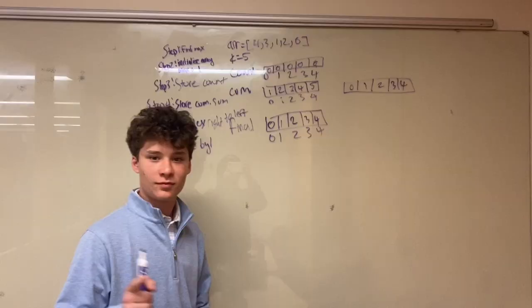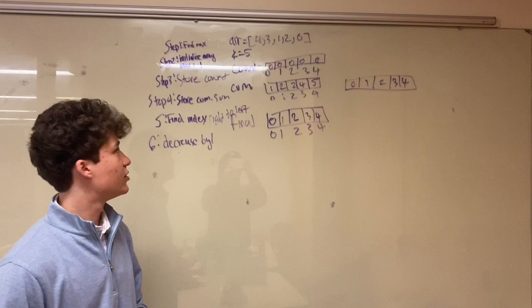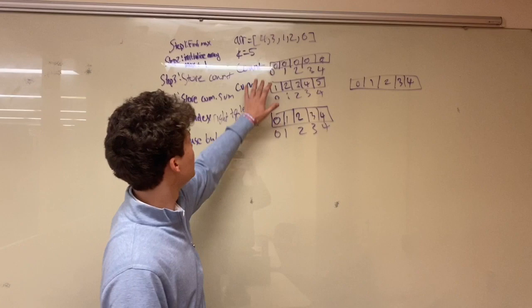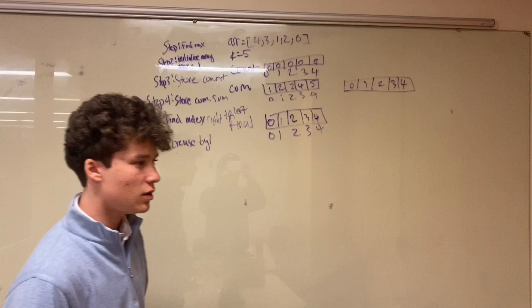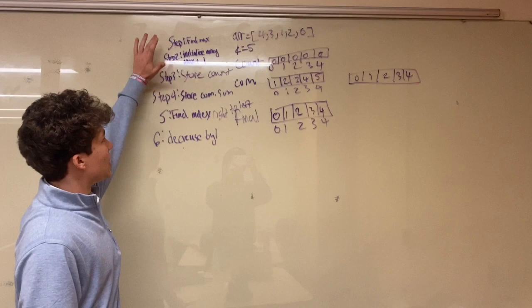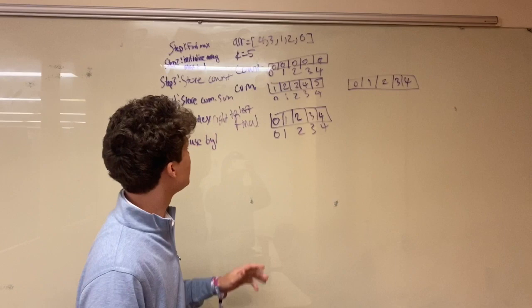Alright, so here's an example of the counting sort algorithm. And for this example, we have an array with the values 4, 3, 1, 2, 0. So we start going through the steps of the counting sort algorithm. Step 1, find max. So in this array, we have five unique different values, so we initialize K to 5.